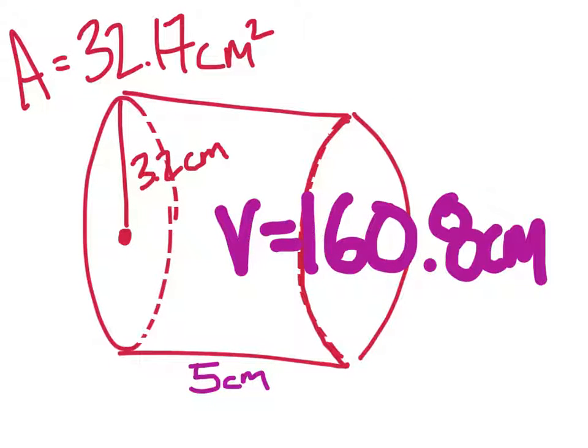By the way, what's the units on this? Centimeters cubed. Why is it cubed? Because volume is three-dimensional. So, you have three centimeters. Centimeters cubed.